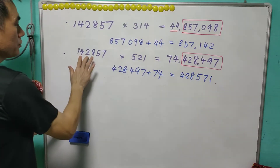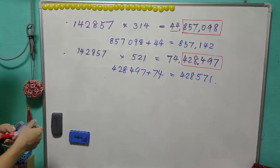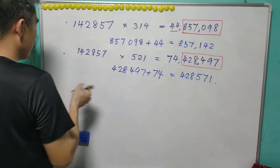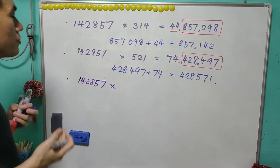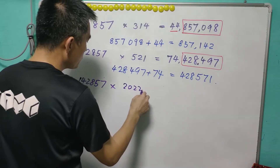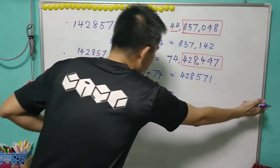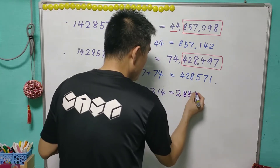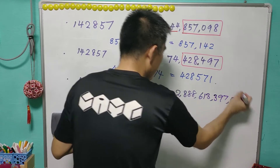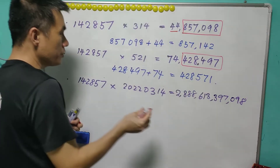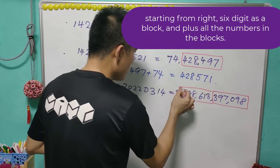What if we multiply by a bigger number? Let's say 142857 times today's date, 20220314. This gives a big number: 2888613397089. What we do is take 6 digits as a block, then 6 digits as a block, and the remaining digits separately.